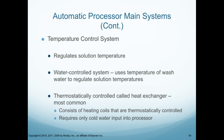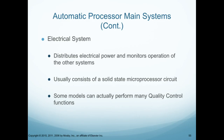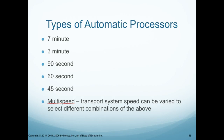The temperature control system regulates the solution temperature. The water-controlled system uses the temperature of the wash water and regulates the solution temperatures. The most common heat exchangers are thermostatically controlled, consisting of heating coils that require only cold water input into the processor. The electrical system distributes electrical power and monitors operation of the other systems, usually consisting of a solid-state micro-compressor circuit. Some models can perform many quality control functions, and these days they would have a small computer to let you know what's going on.